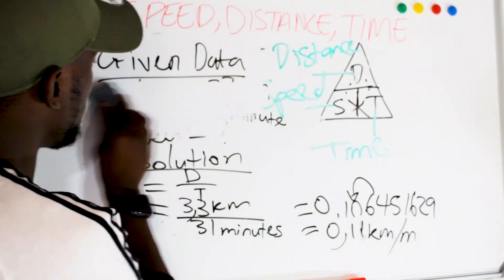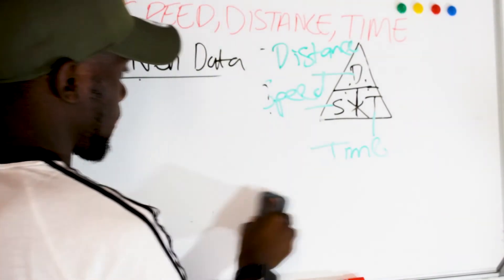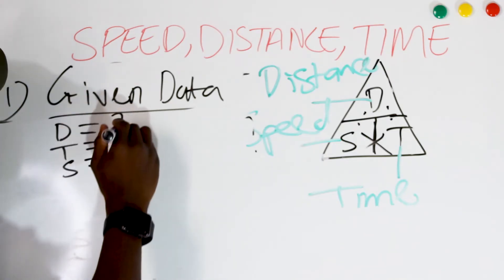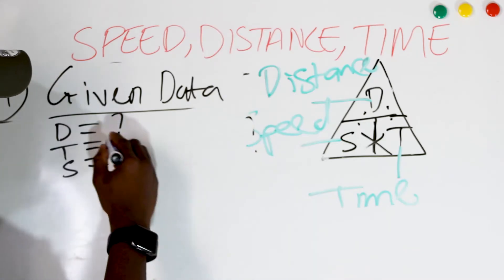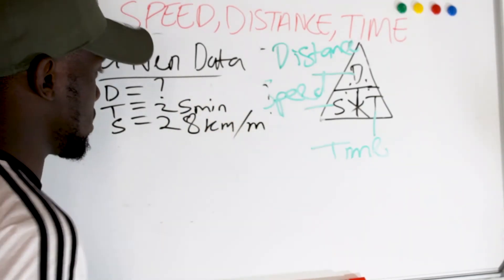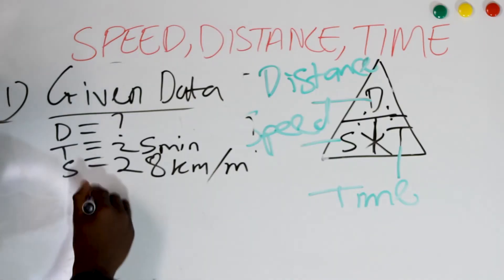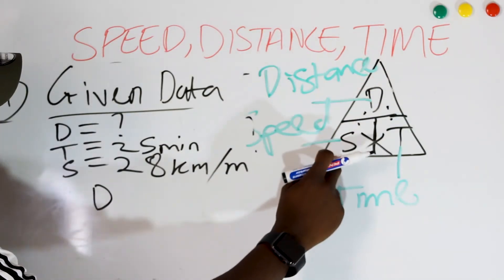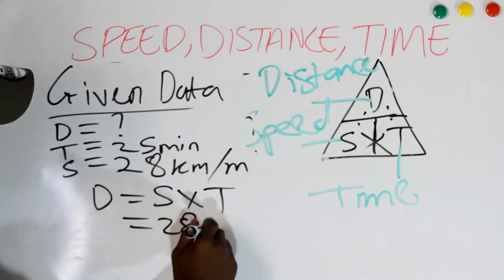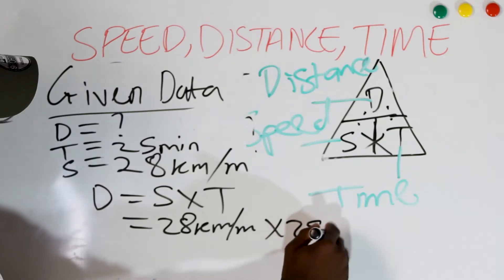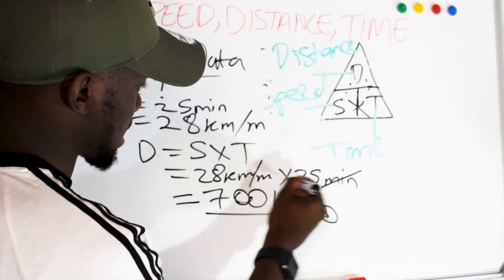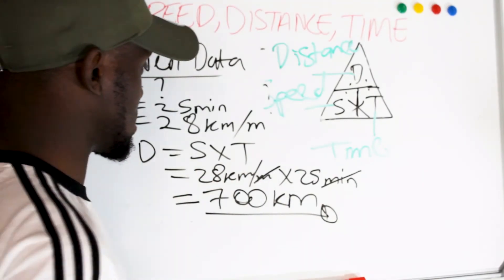Now let's do another example — to calculate distance. D for distance, T for time, and S for speed. We have no distance given; time is 25 minutes and speed is 28 kilometers per minute. The formula for distance is speed times time. So distance equals 28 kilometers per minute times 25 minutes, which gives 700 kilometers. The minutes cancel, leaving us with kilometers.